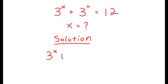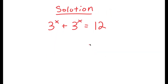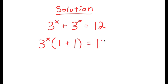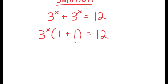I have 3 to the power of x plus 3 to the power of x is equal to 12. What I'm first going to do is factor out 3 to the power of x. So I get 3 to the power of x times 1 plus 1 is equal to 12. Now, 1 plus 1 is 2, so I get 3 to the power of x times 2 is equal to 12.